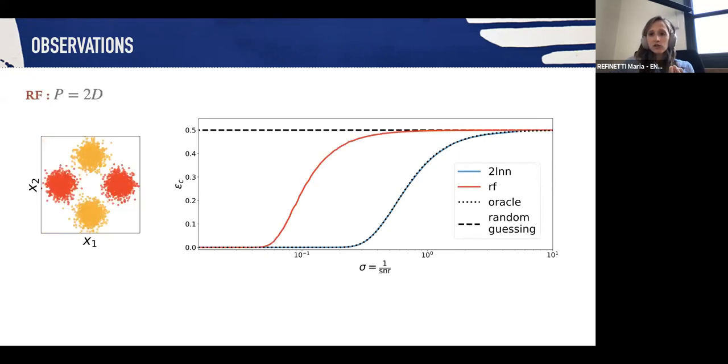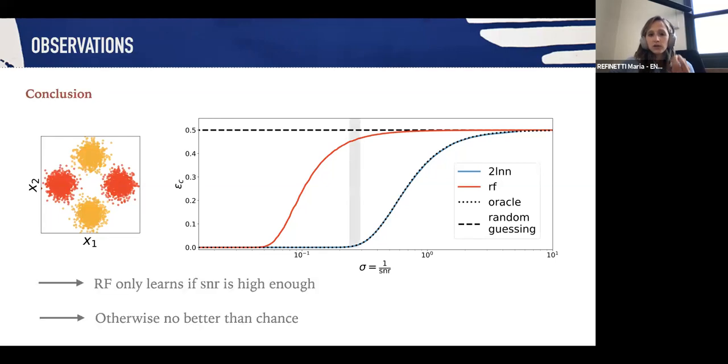In sharp contrast, however, when I use random features, what I see is that there is a wide range of SNR for which random features cannot do better than random chance. So random features can only learn if the SNR is high enough.